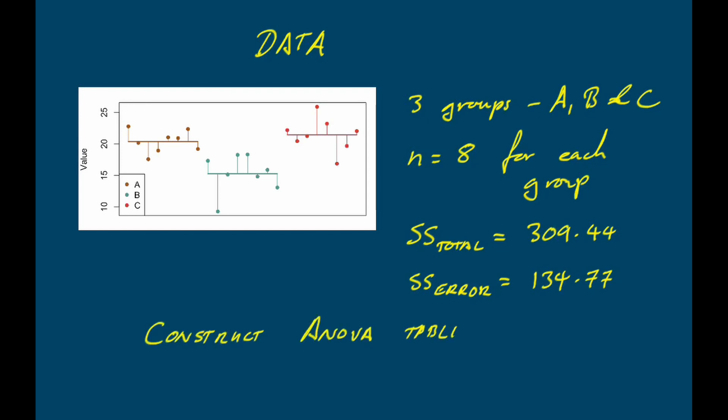We can use these data to construct an ANOVA table and test our null hypothesis, which is that the mean of group A equals the mean of group B equals the mean of group C.